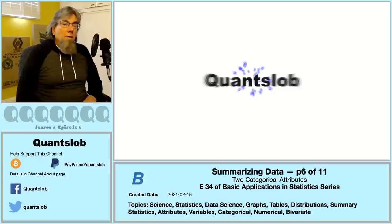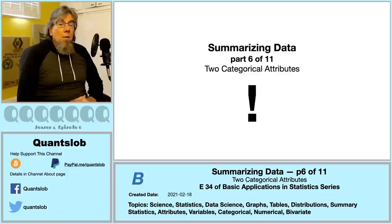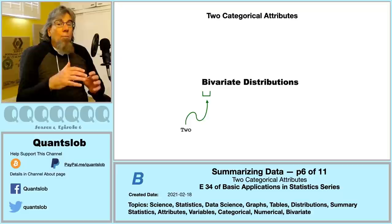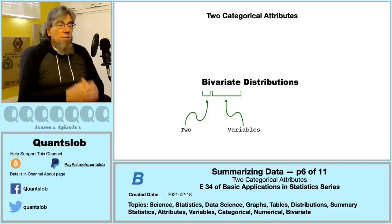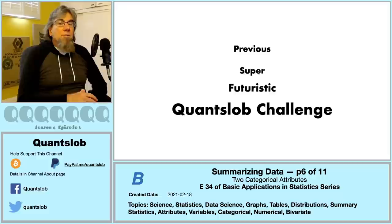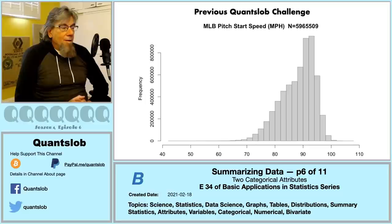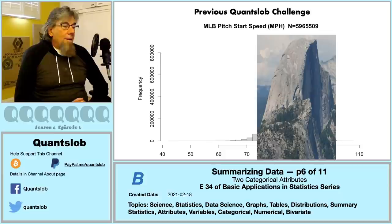Greetings and welcome to another installment of QuantSlob — this is episode 34 in our basic application series. This time we're focusing on ways to summarize two categorical attributes, and more particularly how to convey their bivariate distribution. One very important side effect of summarizing a bivariate distribution is that it can help reveal the nature of the relationship between the two attributes. First, let's visit the previous challenge: how might we describe the shape of that distribution — the histogram? I would start by saying it's not something we can easily liken to something in nature.